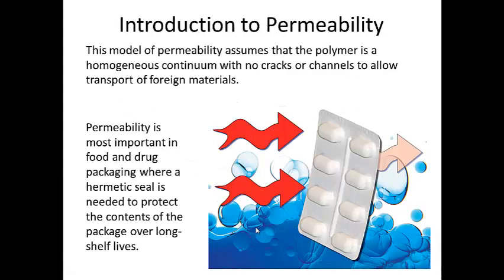Permeability has one primary assumption: the material is a homogeneous continuum that contains no cracks or channels that would allow transport of foreign materials. This is important to keep in mind because oxidation or radiation damage may have created cracks in the polymer, which act as leak paths for the gas or fluid to pass through the polymer membrane.